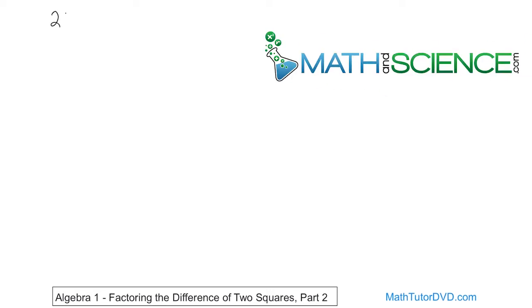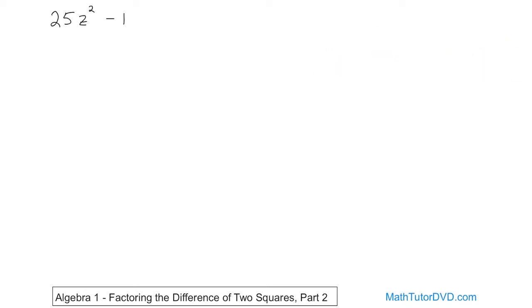So what if you had, for example, 25 times z squared minus 1, and I say factor using the difference of two squares. You're going to say, well, wait a minute, I don't see two squares here. But don't forget, 5 times 5 is 25, z times z is z squared, so this is 5z squared.